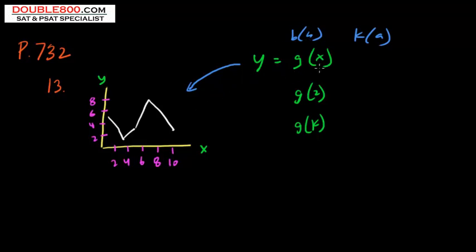We're told this is y, the function y equals g of x, and we have two steps here. The first step is g of 2 equals k. Now you have to recognize the k is the y, even though they kind of switched the order. g of 2 is the x coordinate, k is the y.